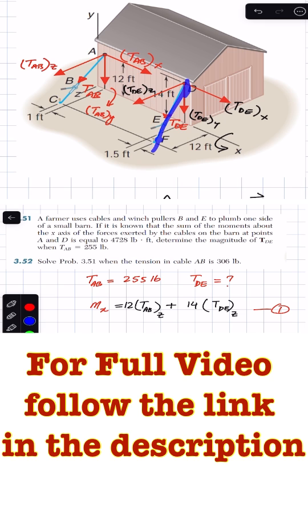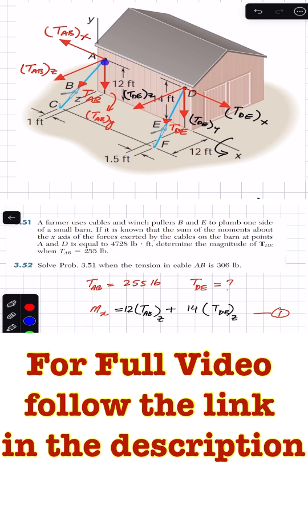When TAB, the tension in wire AB, has a magnitude of 255 pounds. The x component of TAB is in the negative x direction, and the y component is in the downward direction since this rope vector is going in the downward direction along the y axis.